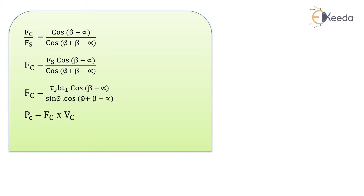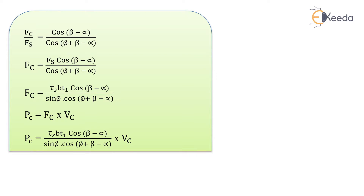We get Fc as Fs into cos of (beta minus alpha) divided by cos of (phi plus beta minus alpha). If we put the value of shear force — that is tau_s into Bt1 divided by sin phi — into this and multiply by Vc, we get the power in metal cutting.